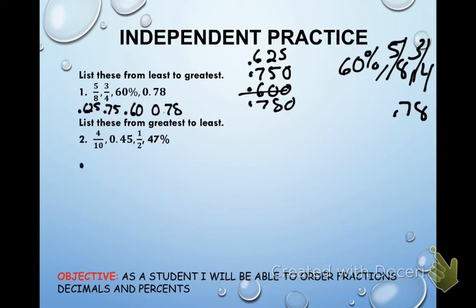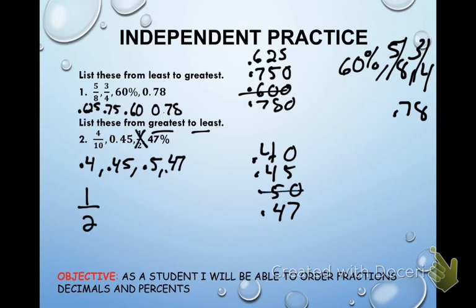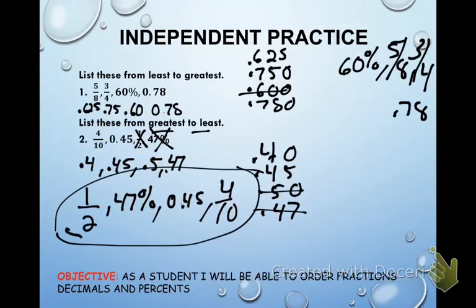For the second problem: four-tenths is 0.4, 0.45 stays as 0.45, one-half is 0.5, and 47% is 0.47. Line them up: 0.40, 0.45, 0.50, 0.47 — add zeros as placeholders giving 40, 45, 50, 47. We want greatest to least. Greatest is 0.50, which is one-half. Next is 0.47, which is 47%. Then 0.45, and finally the least is four-tenths.